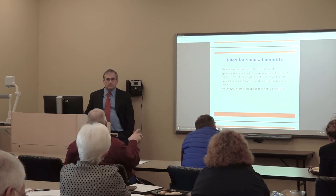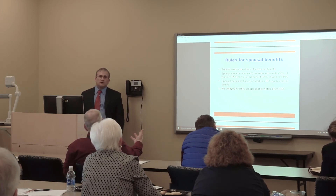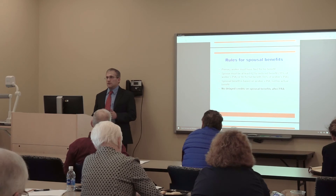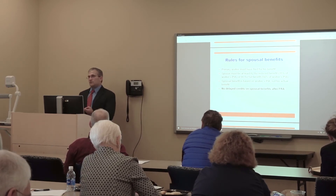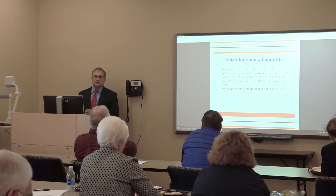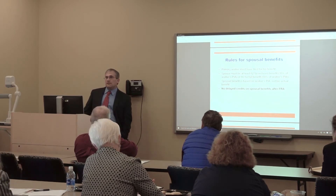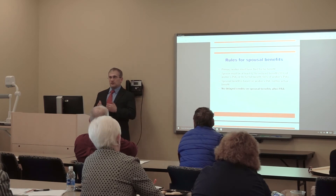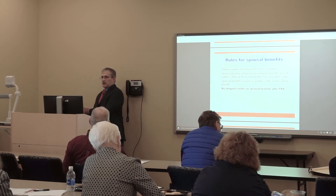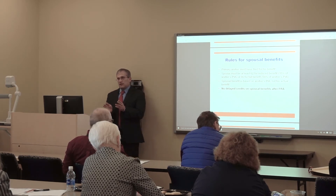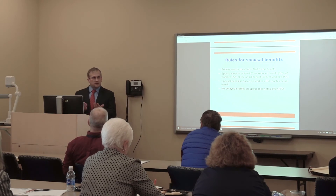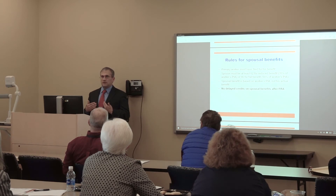Some key spousal benefit rules: the primary worker must have filed for their own benefit. The spouse must be at least 62 for a reduced benefit, or full retirement age for the full 50%. If the other spouse also worked and has their own PIA, they get the higher of their own benefit or the 50% spousal benefit. For example, if their own PIA is $2,000, that exceeds the $1,200 spousal benefit, so they would receive their own benefit.